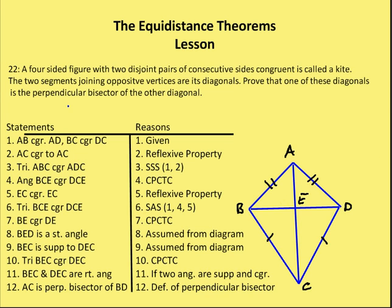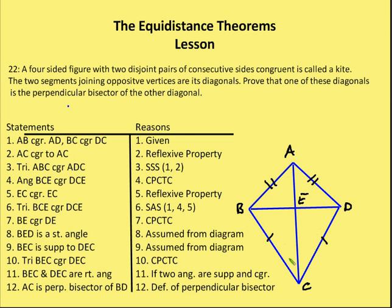AC is congruent to itself by the reflexive property, so triangle ABC is congruent to triangle ADC by side-side-side. By CPCTC, angle BCE is congruent to angle DCE. Now EC is congruent to itself, also by the reflexive property.